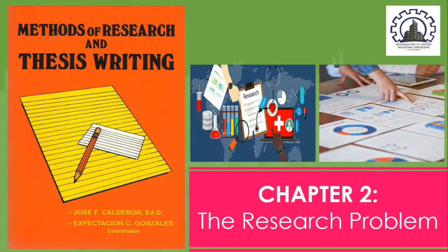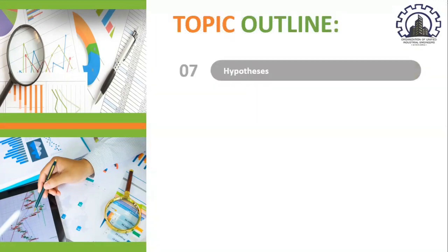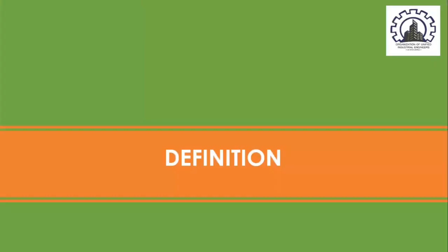In today's lesson, there are seven key areas that I'm going to be discussing. First, we have the definition. Second, the elements of a research problem. Third, the guidelines in the selection of a research problem or topic. Fourth, the title. Fifth, the statement of the problem. Sixth, the assumptions. And finally, the hypothesis. Today, we will discuss the first key area: the definition of a research problem.